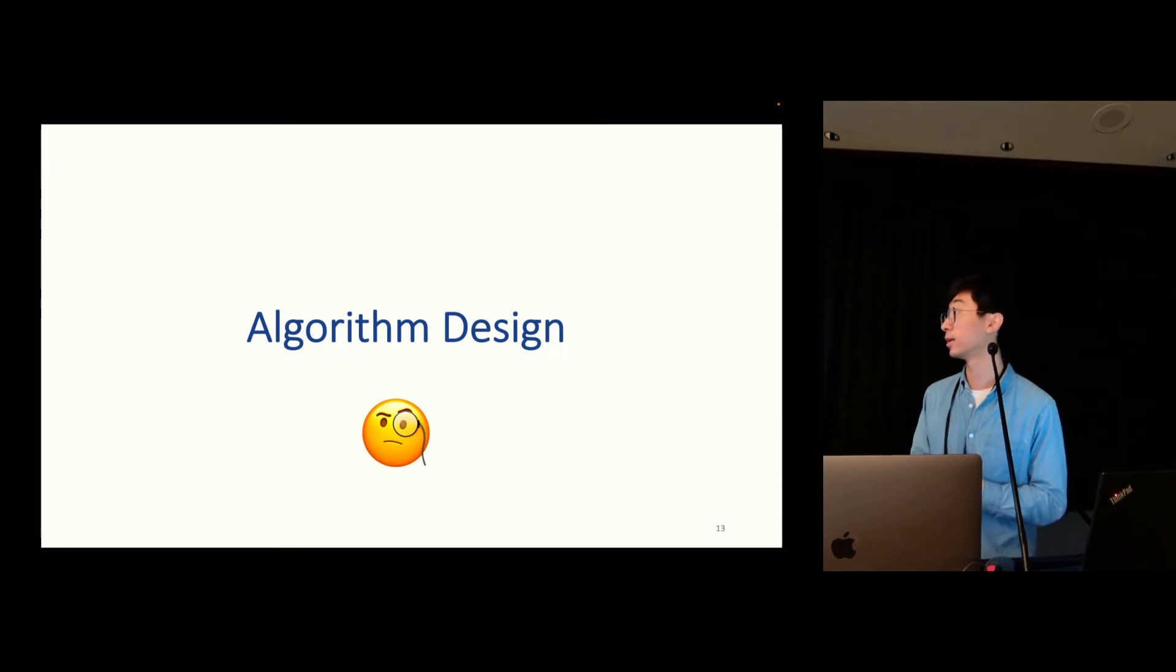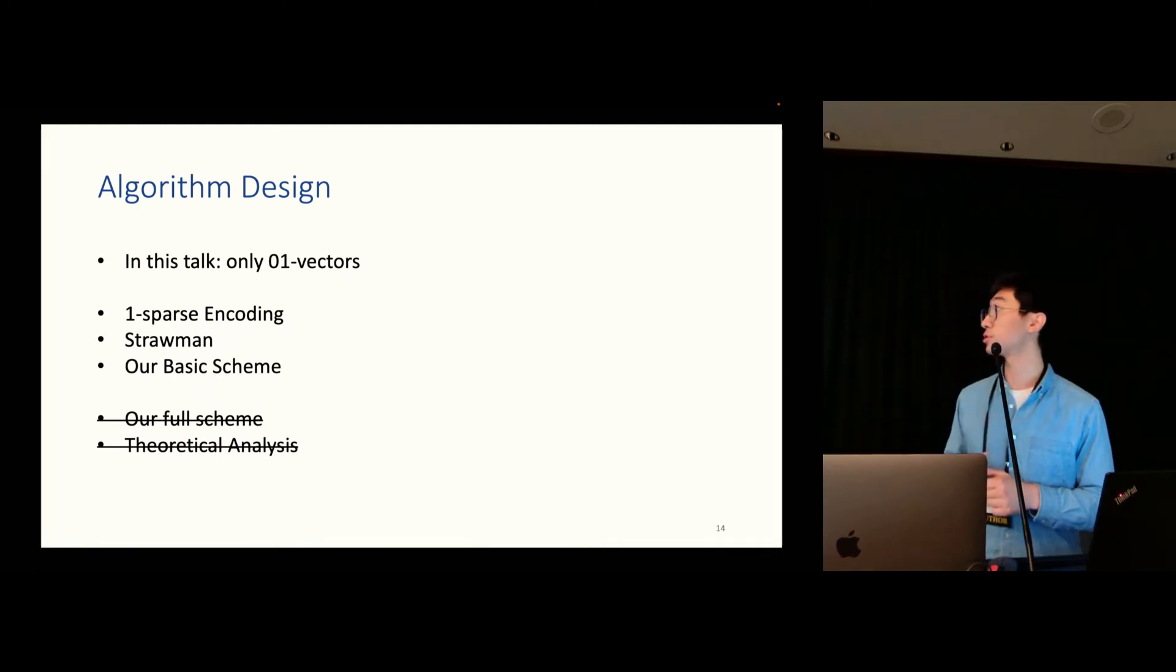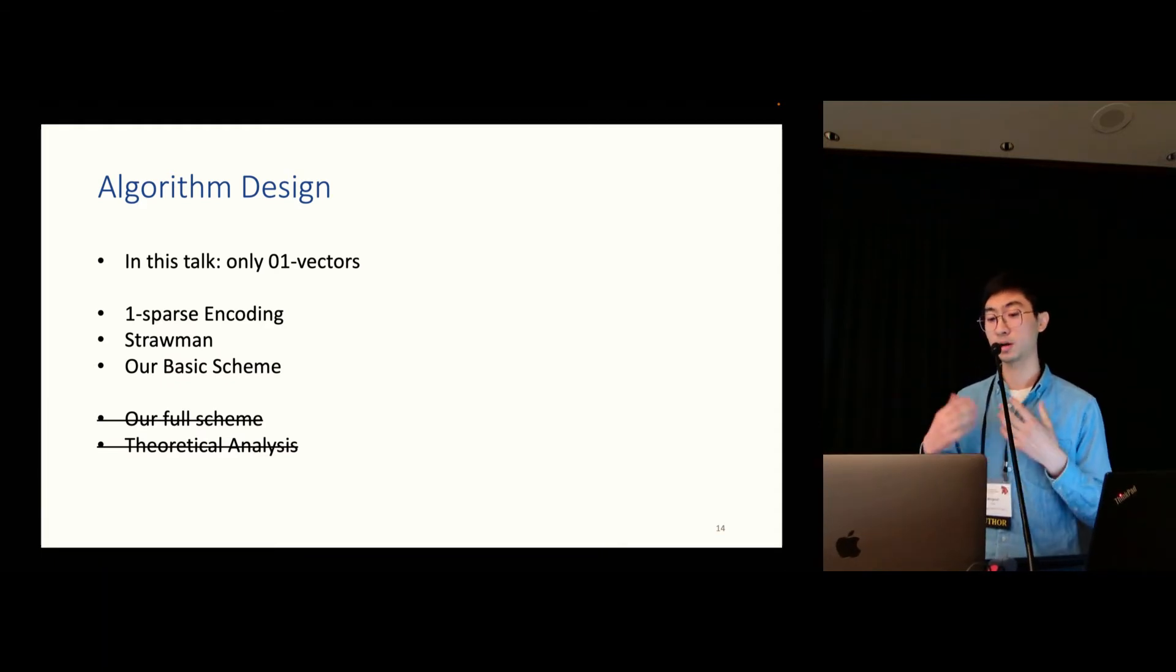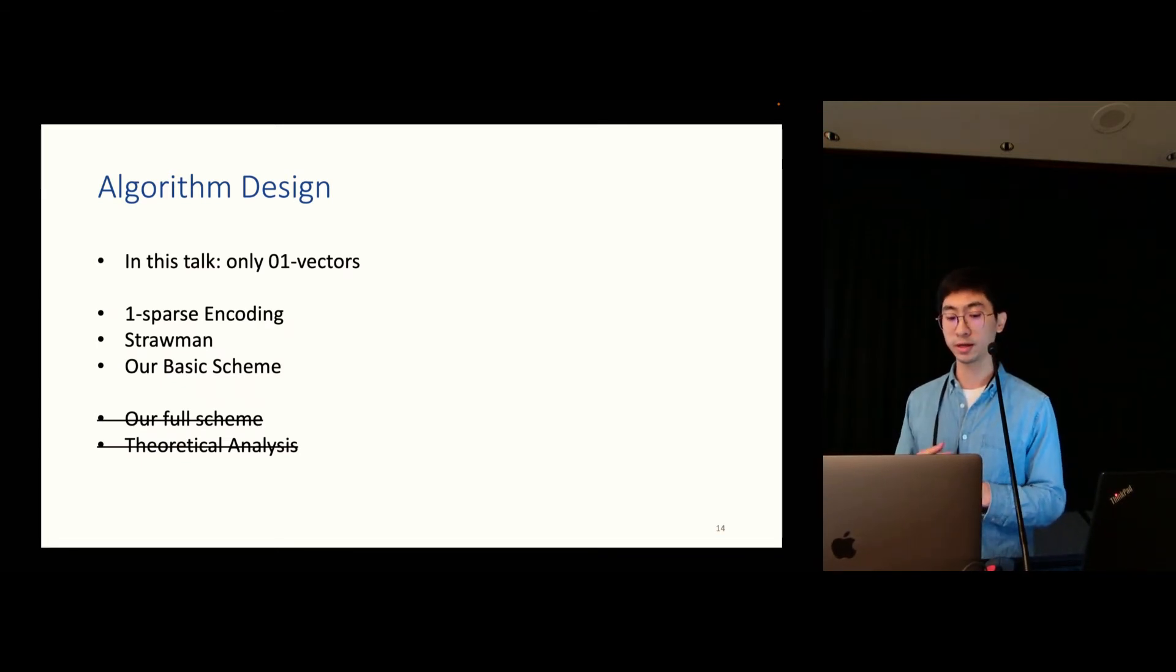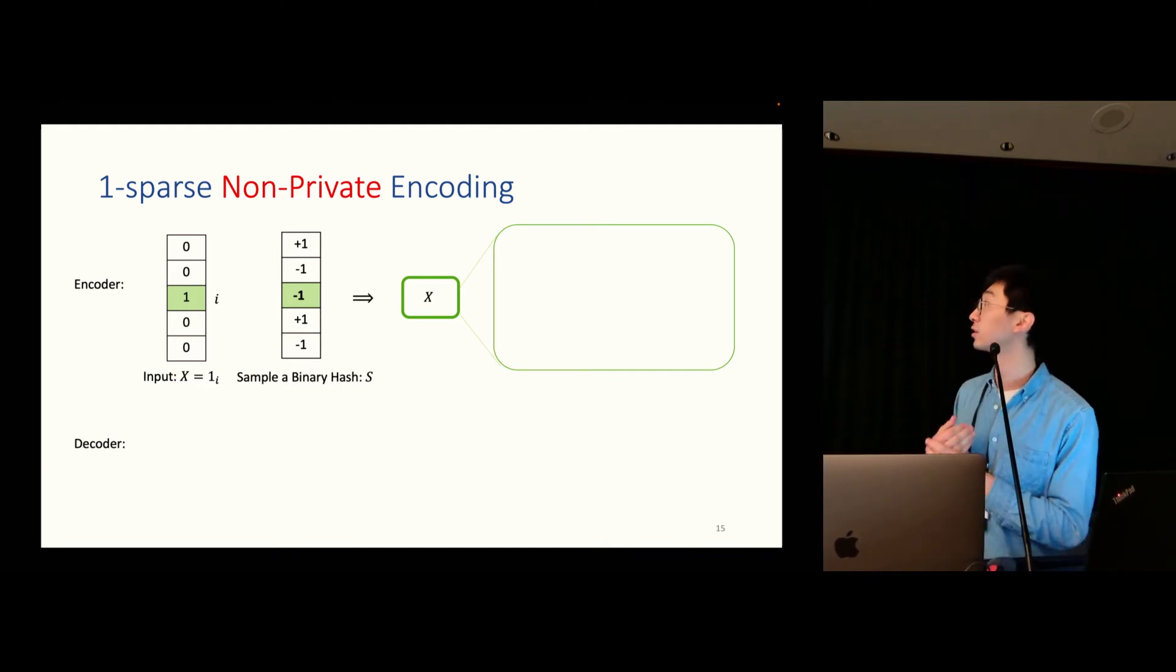Now, let's talk about some algorithm design. In this talk, I would try to make it as simple as possible. So, we're going to assume those inputs are all 0-1 vectors. I'm going to start from one sparse encoding, and I'm going to talk about how we construct the strawman scheme, and how we use our basic scheme to overcome the drawbacks of those strawman schemes. I'm not going to cover our full scheme here, and I'm not going to cover detailed theoretical analysis.